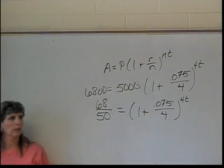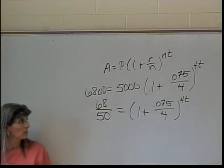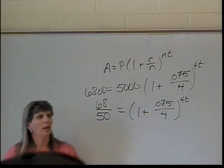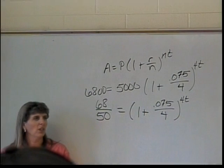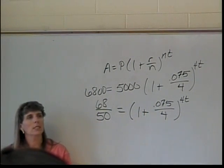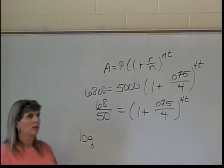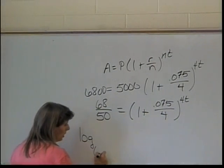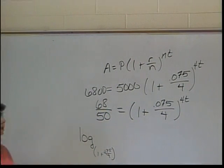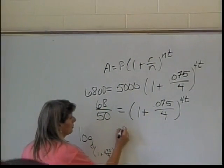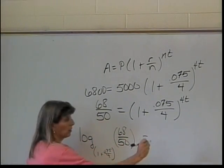Now what? I'd switch it now. I can figure out what that is later when the time comes. Switch to what? Log. Okay, base what? Base whatever. Yeah, this mess in the parentheses, 1 plus 0.075 over 4. Of what? 68 over 50. Of 68 over 50. And what's that equal to? 4 times T.